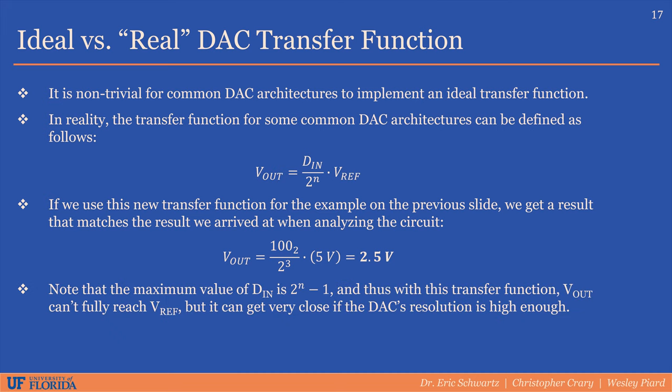All is not well, however, because since the maximum digital input value is 2^n minus 1, we can never actually get a voltage output that is equivalent to the reference voltage. As an example, if we want to calculate the maximum voltage we can output, we use 2^n minus 1 as the digital input to the transfer function. This gives us a voltage that is 7/8 of the reference voltage.